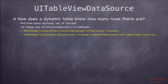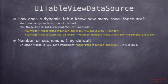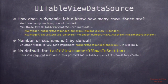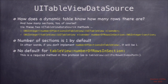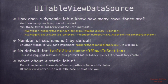The other two data source methods are numberOfSectionsInTableView and numberOfRowsInSection. If you don't implement numberOfSectionsInTableView it defaults to one, so you get one big section. The rows method is required — there's no default — and the table asks it repeatedly, once for every section. For a static table you don't have to implement any of these three methods; UITableViewController takes care of it all. Just edit the storyboard how you want it.